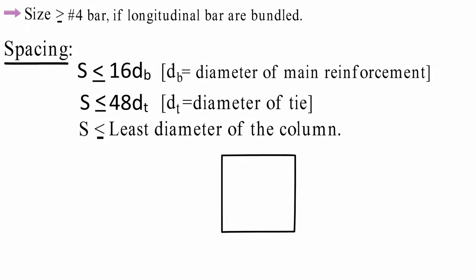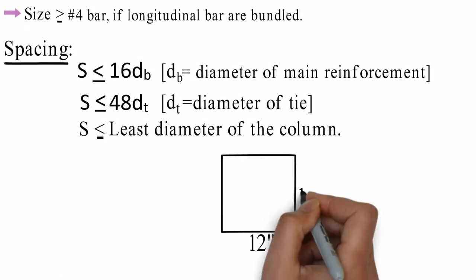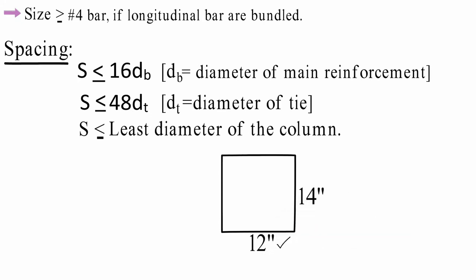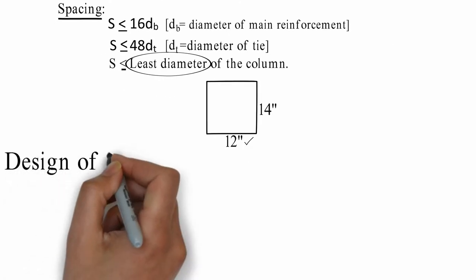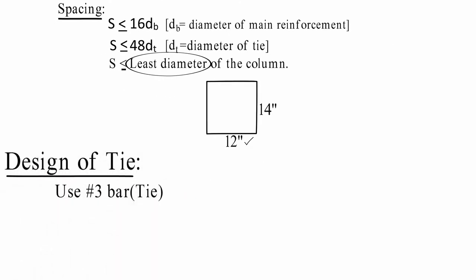We consider a column section 12 inch by 14 inch. Here least dimension equals 12 inch, the smaller dimension. Design of tie: use #3 bar tie.